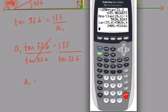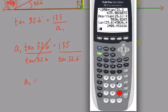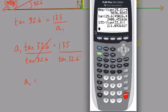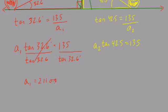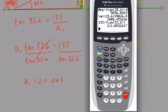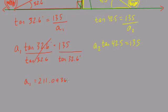Here, the first adjacent distance is equal to what? Well, we'll use a calculator here. We have 135, divided by, put parentheses, tangent of 32.6, close parentheses. So, 211.093, so 211.09, 0.093, 6167. That's an approximation.